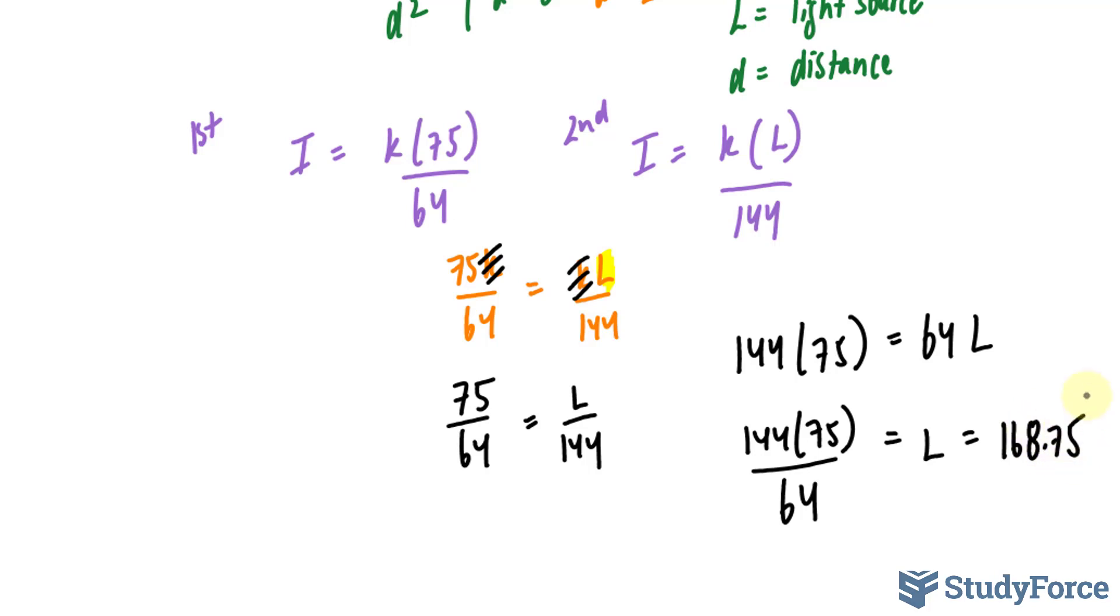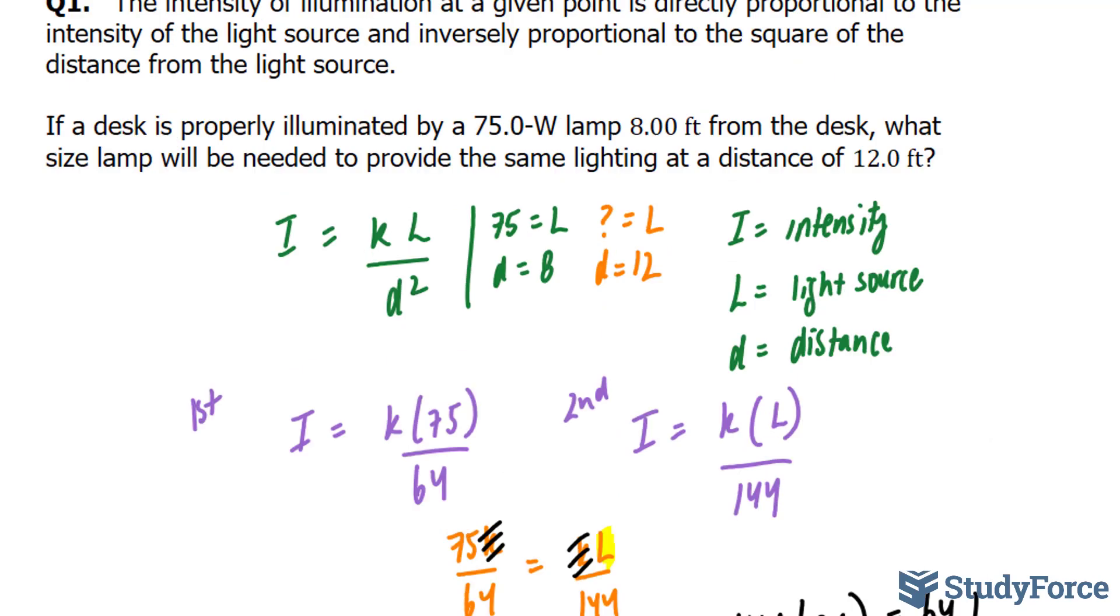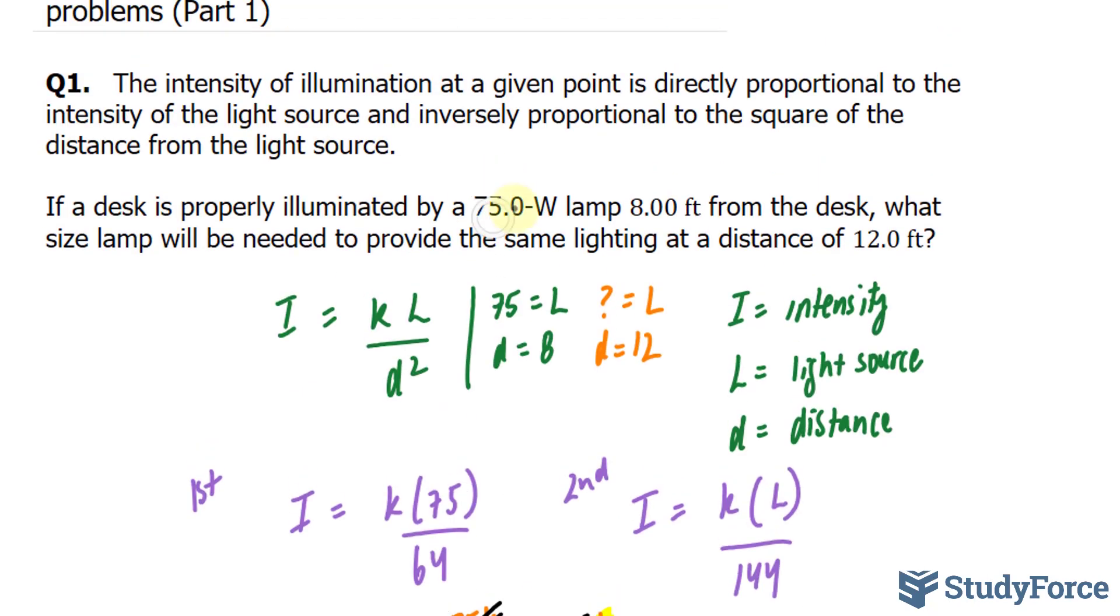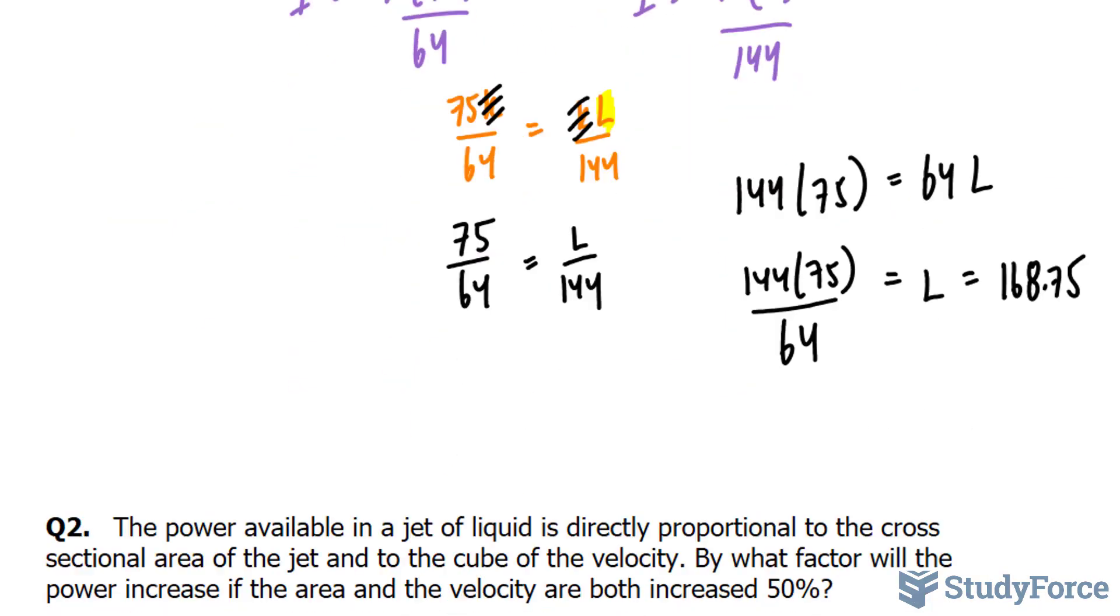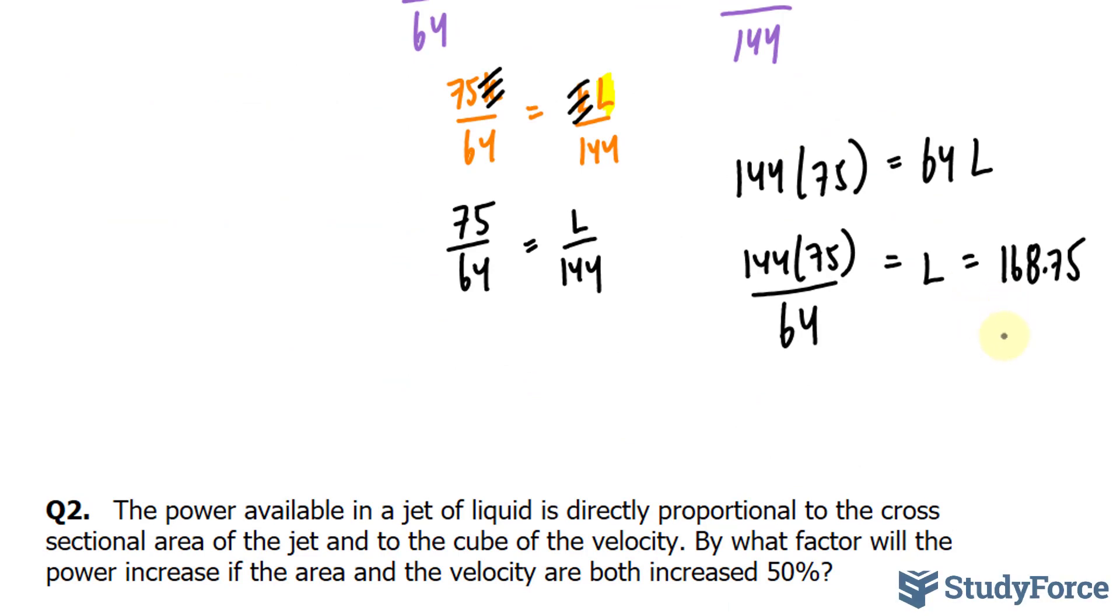Now, if we want to be consistent with the correct number of significant figures, we had three significant figures here, three here, and three here. So our final answer should also have three. Therefore, we can round our answer to 169 watts.